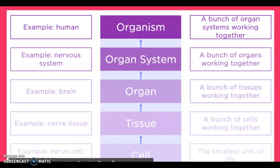Here's an example using a human. We go from the cell — the smallest unit of life, the smallest unit of structure and function. An example would be a nerve cell, which is a neuron. Then a tissue is a bunch of neurons working together, called nerve tissue. An organ is a bunch of tissues working together, such as the brain in the nervous system. An organ system is a bunch of organs working together — like the nervous system, digestive system, or respiratory system — and then the organism is all organ systems working together, making us human.